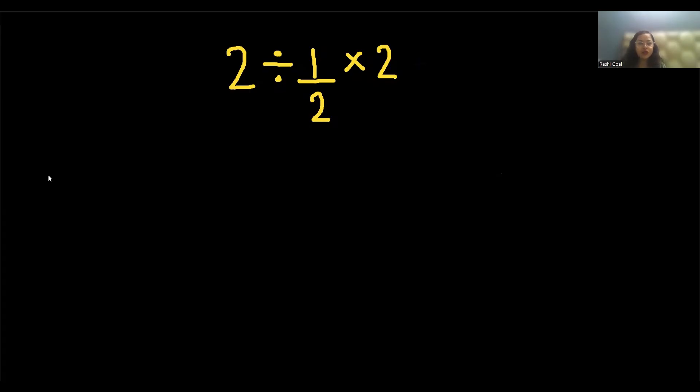Let's start with today's video solution. So 2 divided 1 by 2 times 2. This gives 1 times 2 which is 2.